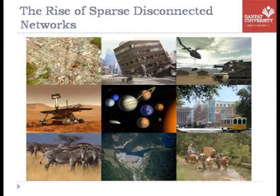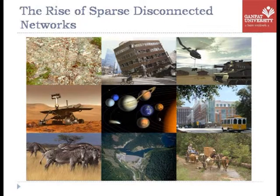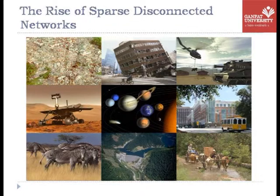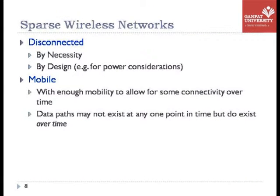Now consider this scenario: what if there is a disaster, what if you want to measure the health of a zebra, what if there are flood situations, or what if you want to use it for satellite missions? This leads to a kind of network we term as a sparse disconnected network. Let's understand what we mean by a sparse wireless network and why there is disconnection — it may be by necessity or by design, maybe to save power.